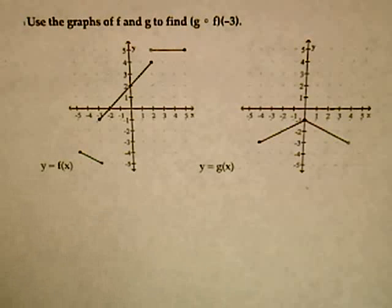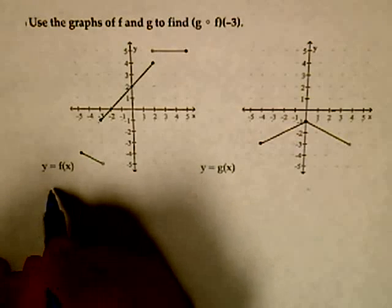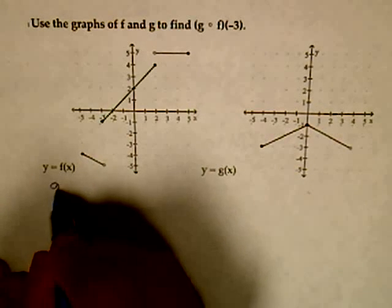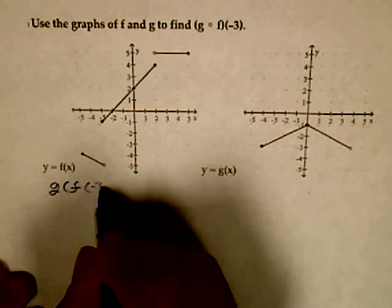We are going to use the following two graphs to find the composition g of f of negative 3. First of all, I'd like to rewrite that as g of f of negative 3.